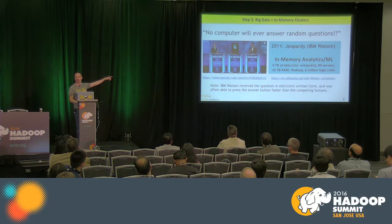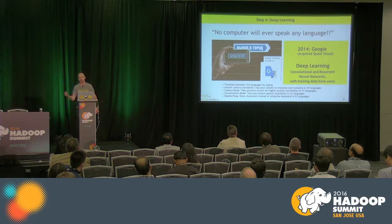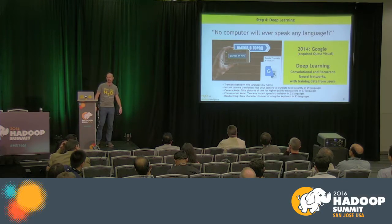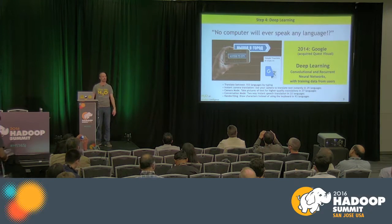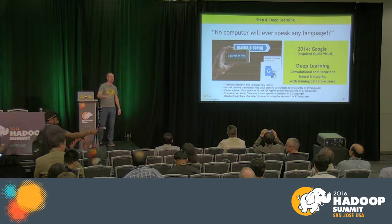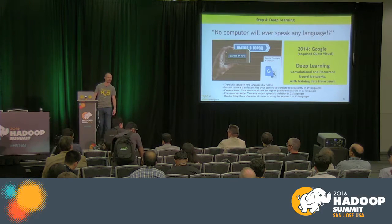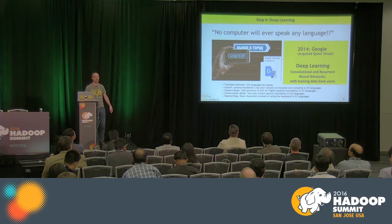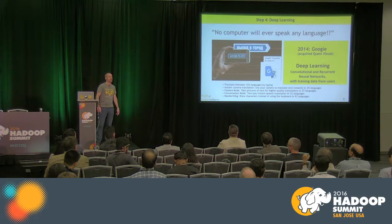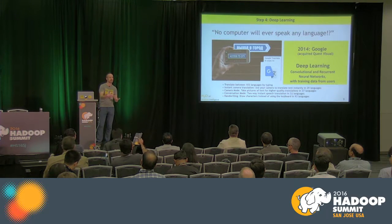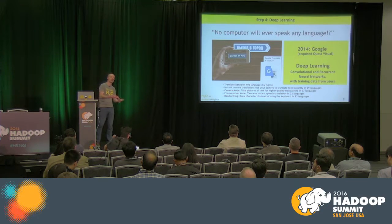Even though the humans were really smart — if you watch the video, you'll be surprised how good they were — they were not as fast as the machine at pressing the button. Then Google, or actually a company they acquired, said we can turn anything written into a different language. You could say that is artificial intelligence — who else could understand all 100 languages listed in Google Translate? But it's just best matching of some training data. Humans give feedback, it fixes itself, and gets smarter and smarter.